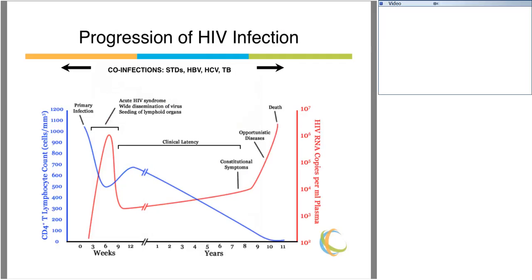Once a patient becomes infected with HIV, it goes through a progression in the body called the natural history of HIV infection — the progression if the patient were not on any antiretroviral therapy. On the left-hand side is primary HIV infection, typically within the first six weeks after infection, when the patient can have acute retroviral syndrome. Next, they go through clinical latency, where a patient may not feel sick for many years but the virus is slowly replicating. Eventually, as the CD4 count declines from ongoing damage, the risk for opportunistic infection and death increases and progression can be very rapid.